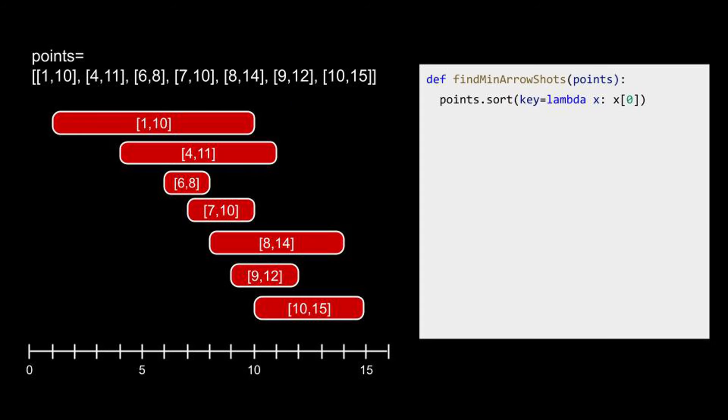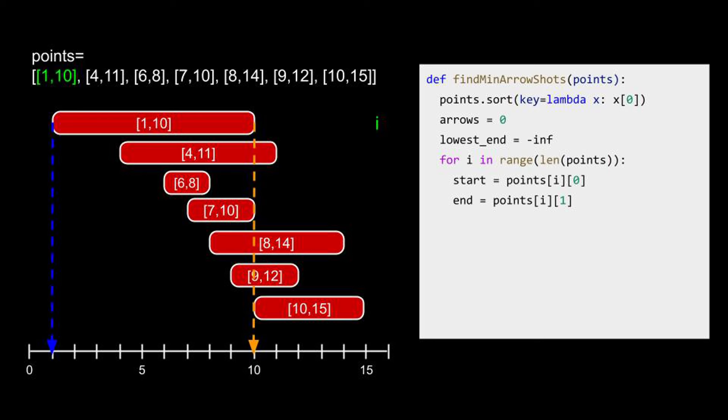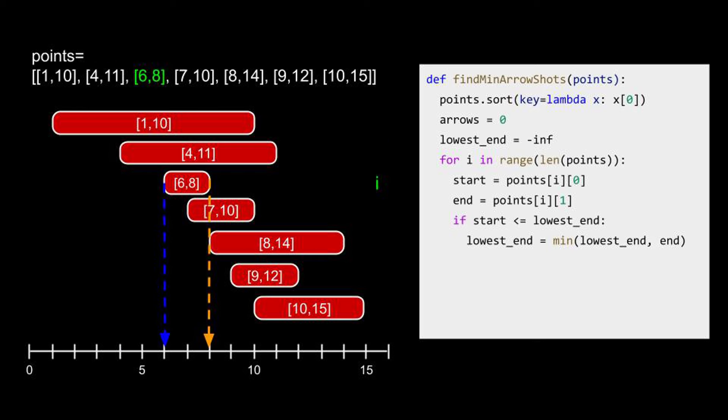To do this programmatically, we keep track of the lowest end point we have seen so far among the unpopped balloons. Next, we iterate over each balloon. If its start is smaller than the lowest end point seen, we check if its end point is smaller. If it is, then we update the lowest end point we have seen so far.